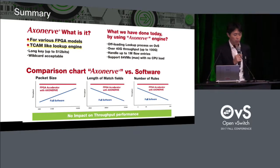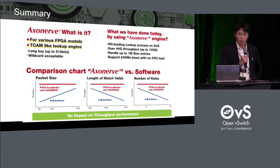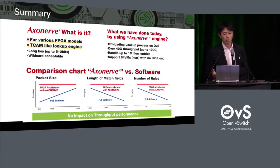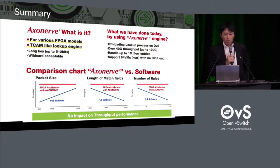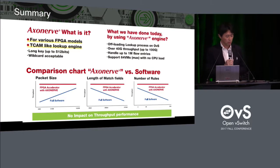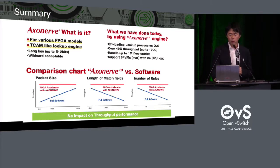So today's summary — two main points. One is that Axanab technology is an FPGA-based, TCAM-like lookup engine. The other is today's demo system, where we use FPGA offloading for the lookup process in OVS. We believe that Axanab can replace hash-based or TCAM-based lookup processes for OVS systems.